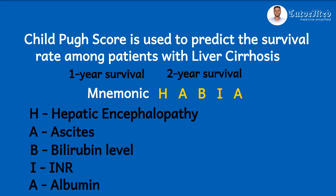The components of the Child-Pugh score system can be remembered with the acronym HABIA: Hepatic Encephalopathy, Ascites, Bilirubin level, INR, and Albumin. Thank you for watching this short episode of TutorMed. Please don't forget to like and share this video, subscribe to our channel, and hit the notification bell for updates when we upload new videos. Thank you once again, bye!